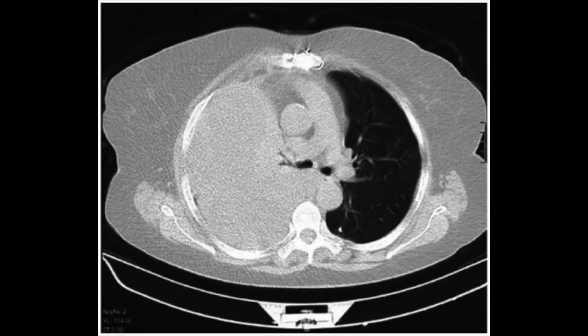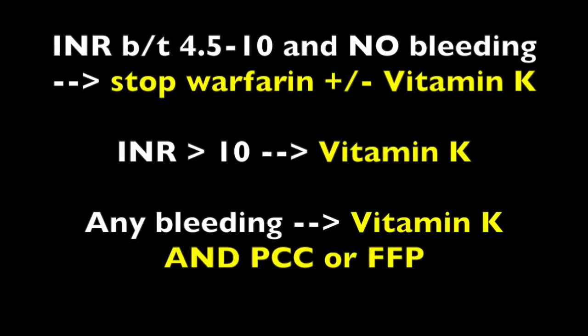The main treatment for warfarin when the INR is out of therapeutic range is Vitamin K, because warfarin is a Vitamin K antagonist. If the INR is between 4.5 and 10 with no bleeding, stop the warfarin and give Vitamin K as needed. If the INR is greater than 10, definitely give Vitamin K. If there is any bleeding at all, give Vitamin K plus prothrombin complex concentrate and fresh frozen plasma.